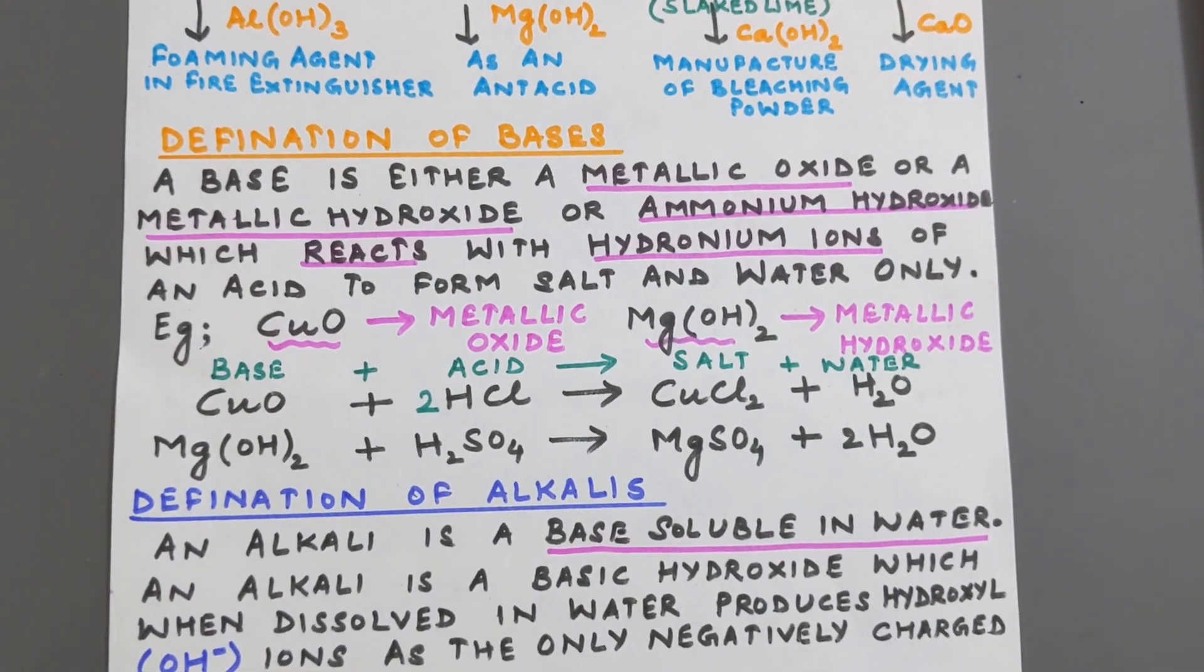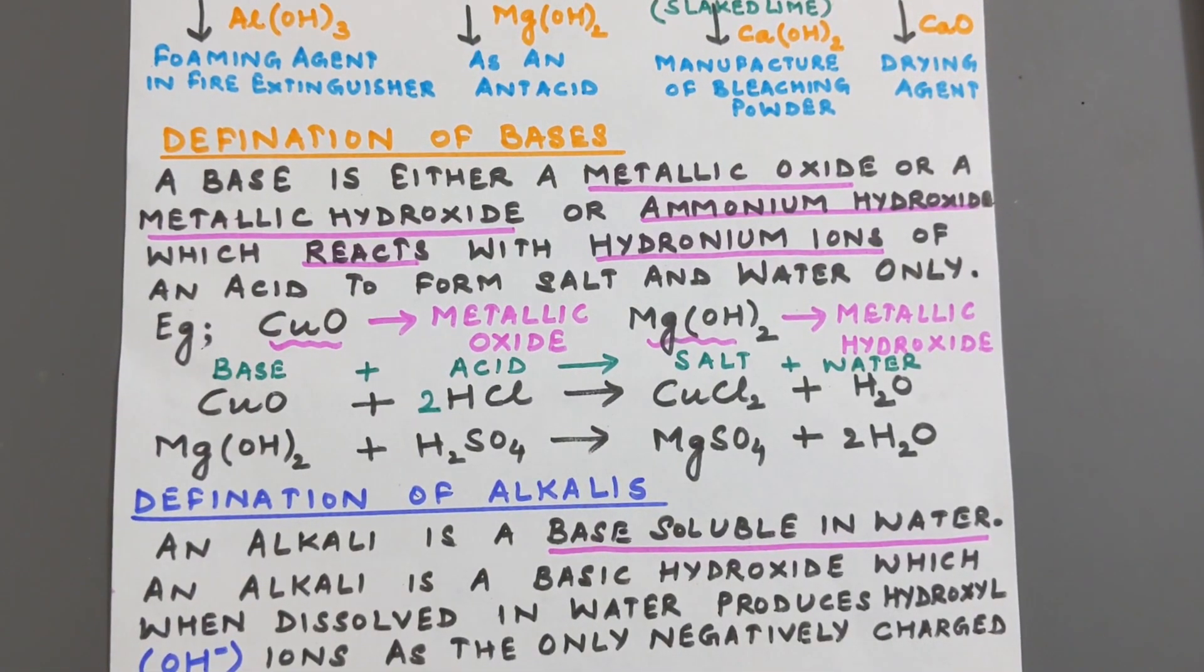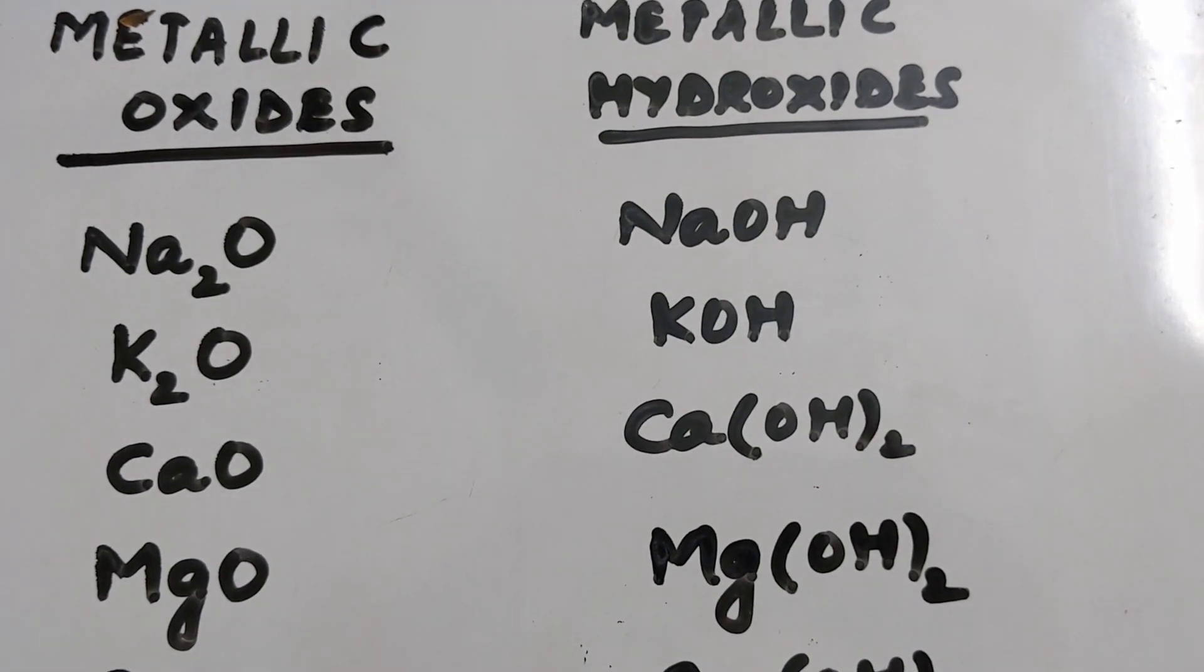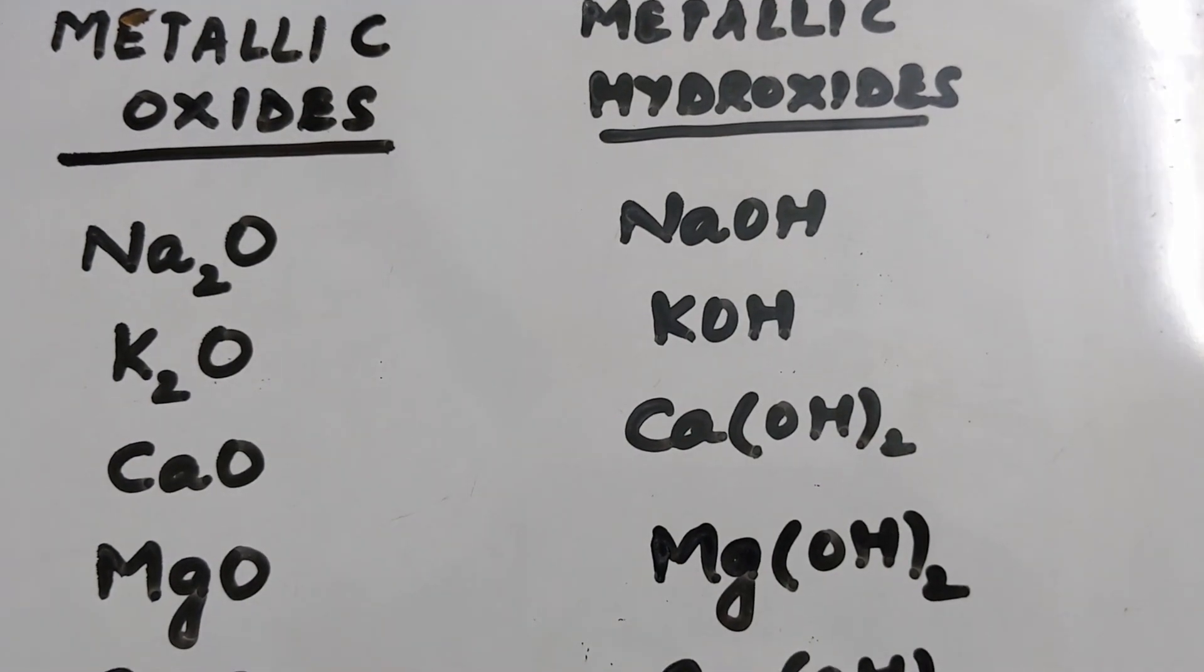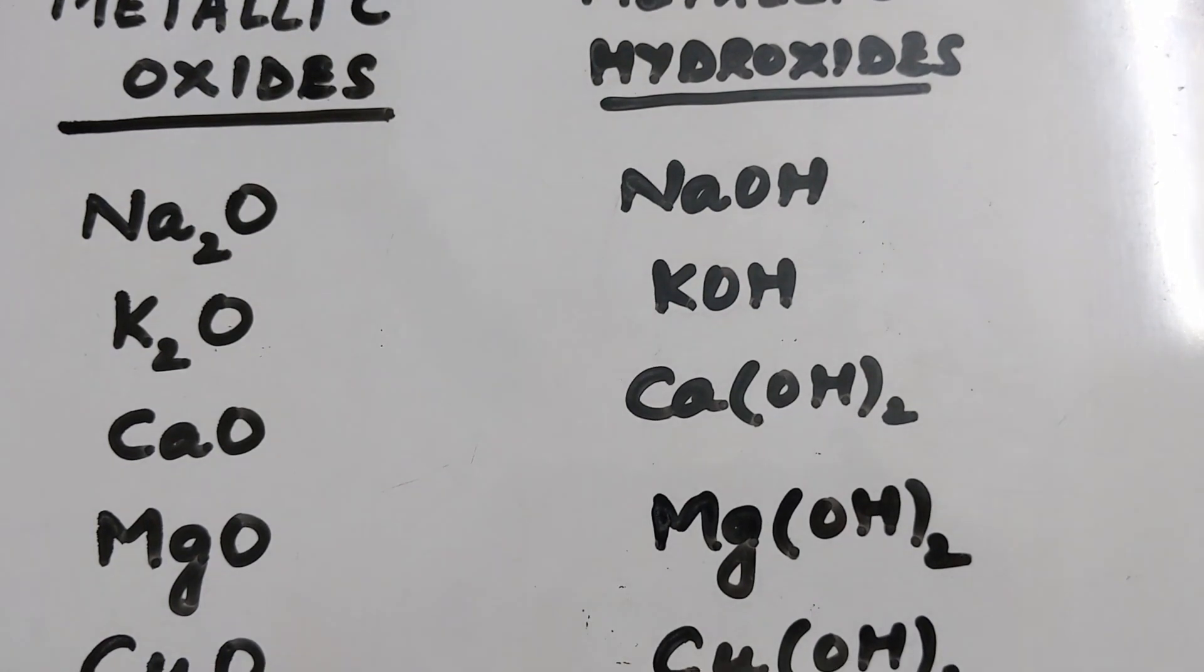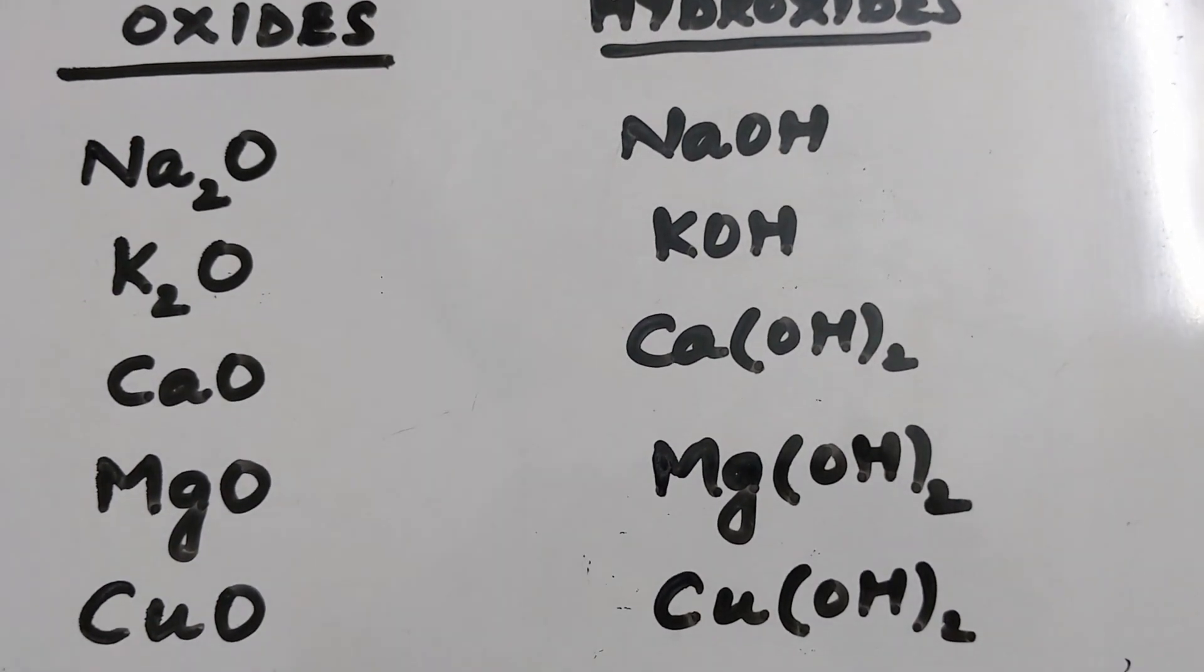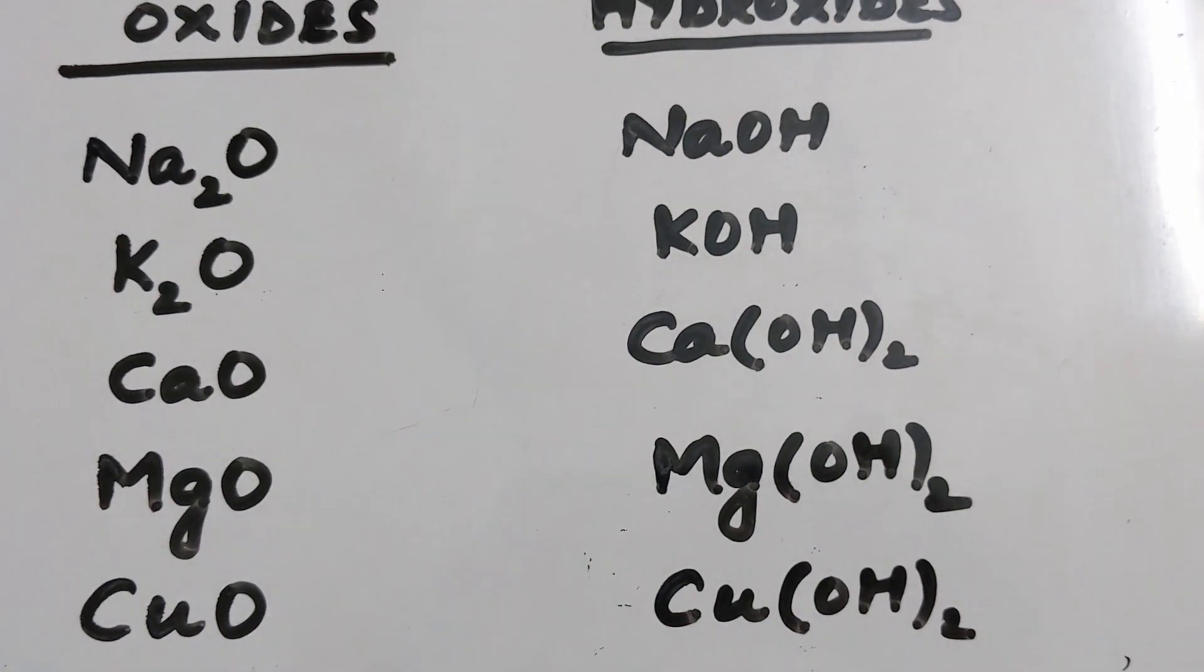So let us take examples of metallic oxides and hydroxides. These are few examples: sodium oxide Na2O, potassium oxide K2O, calcium oxide CaO, magnesium oxide MgO, copper oxide CuO.